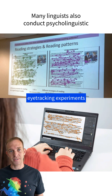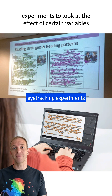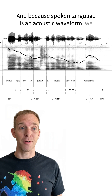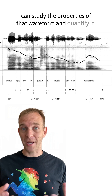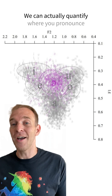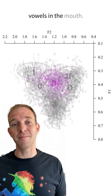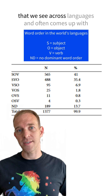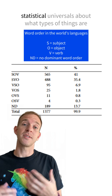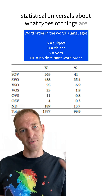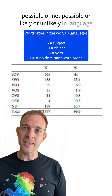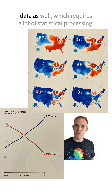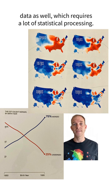Many linguists also conduct psycholinguistic experiments to look at the effect of certain variables on how we produce speech. And because spoken language is an acoustic waveform, we can study the properties of that waveform and quantify it — we can actually quantify where you pronounce vowels in the mouth. The field of linguistic typology also looks at the patterns we see across languages and often comes up with statistical universals about what types of things are possible, not possible, likely, or unlikely in language. A lot of sociolinguistics also works with survey data, which requires a lot of statistical processing.